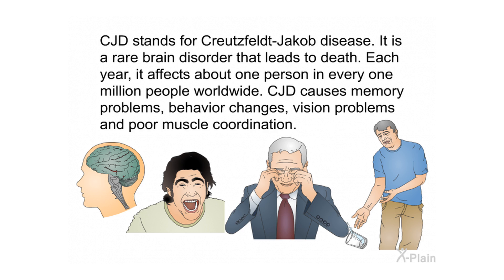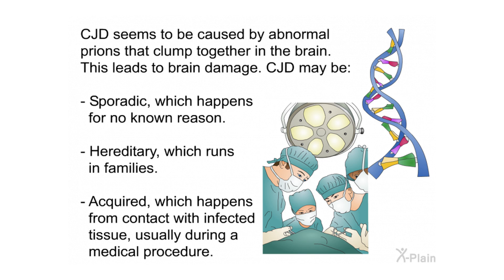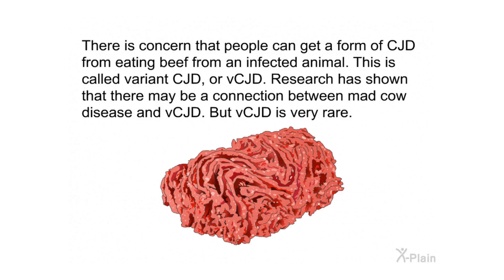In summary, CJD is a rare brain disorder affecting about one person per million worldwide, causing memory problems, behavior changes, vision problems, and poor muscle coordination. It is caused by abnormal prions that clump in the brain. CJD may be sporadic (no known reason), hereditary (runs in families), or acquired (from contact with infected tissue during a medical procedure). There is also concern about variant CJD linked to mad cow disease, though vCJD is very rare.